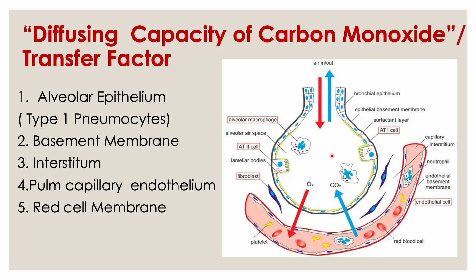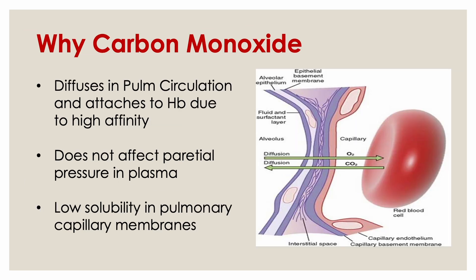Diffusion testing will help us diagnose diseases of this alveolar-capillary unit. We use carbon monoxide because we need a good surrogate for the transfer of oxygen and carbon dioxide across the alveoli. Carbon monoxide dissolves easily and has a very high affinity for hemoglobin. Using that affinity, carbon monoxide will continue to diffuse without instantly equilibrating, allowing us to estimate its rate of diffusion.